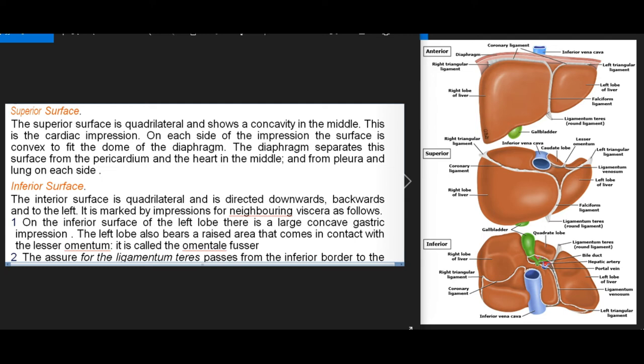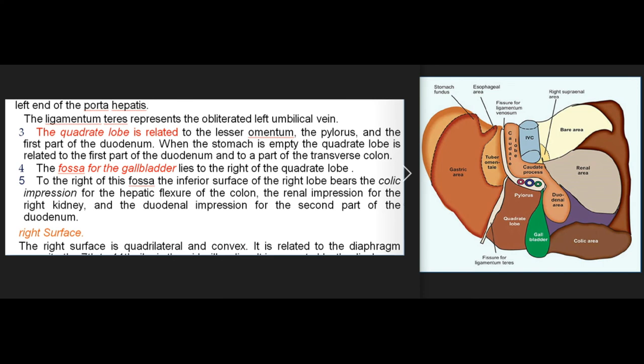Inferior surface: quadrilateral, directed downwards, backwards, and to the left, marked by impressions for neighboring viscera. On the inferior surface of the left lobe there is a large concave gastric impression. The left lobe bears a raised area called the omental fossa. The fissure for the ligamentum teres passes from the inferior border to the left end of the porta hepatis, representing the obliterated left umbilical vein. The quadrate lobe is related to the lesser omentum, the pylorus, and the first part of the duodenum. To the right of the quadrate lobe lies the fossa for the gallbladder. Further right, the inferior surface bears the colic impression for the hepatic flexure, the renal impression for the right kidney, and the duodenal impression for the second part of the duodenum.